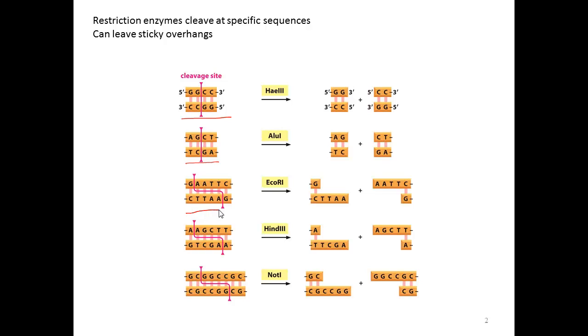Six base pair recognition sequences are found less frequently. You calculate how often any particular sequence would occur by taking four to the power of the number of bases, so this sequence would occur one in every four to the six base pairs. This is the sequence cleaved by the enzyme EcoRI. Here you see what's called a sticky overhang. It did not cut straight across but offset, leaving a few bases that can be used to hybridize when you're trying to stitch DNA pieces back together.